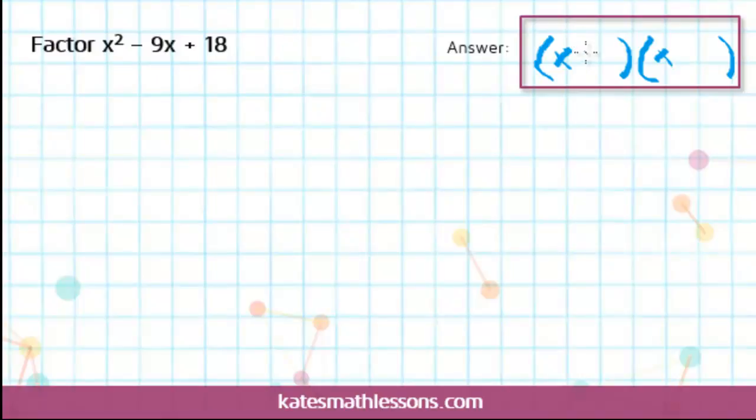We can't do a plus and a minus, because that would multiply to a negative 18, so our only options are either two plus signs or two minus signs.